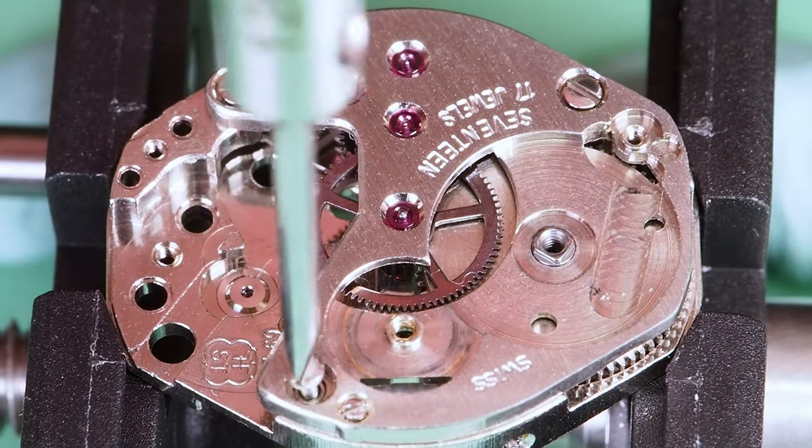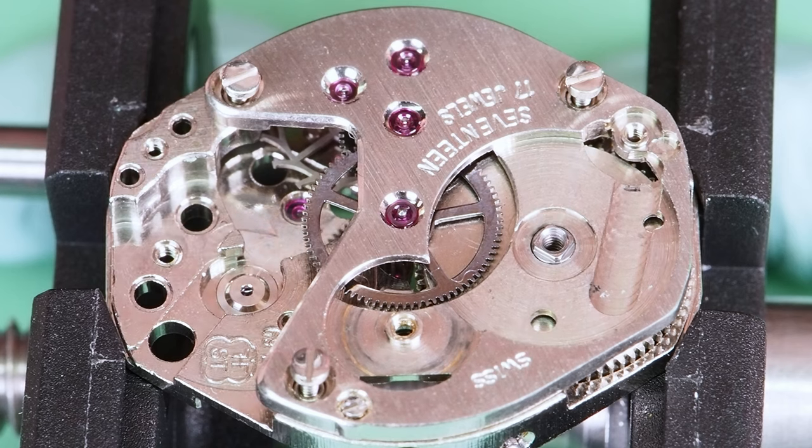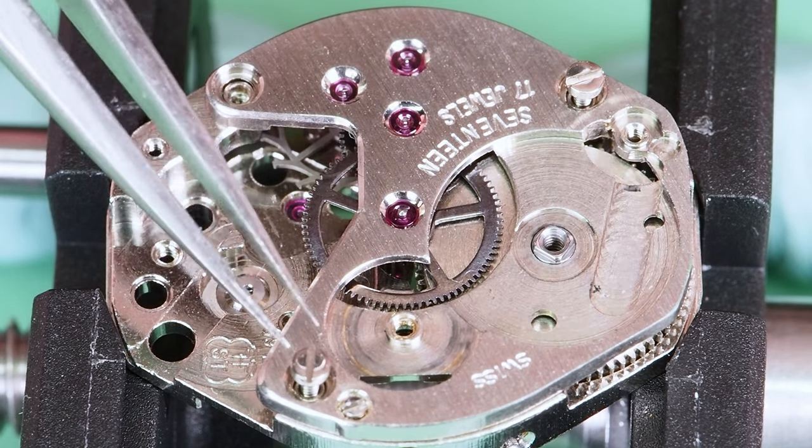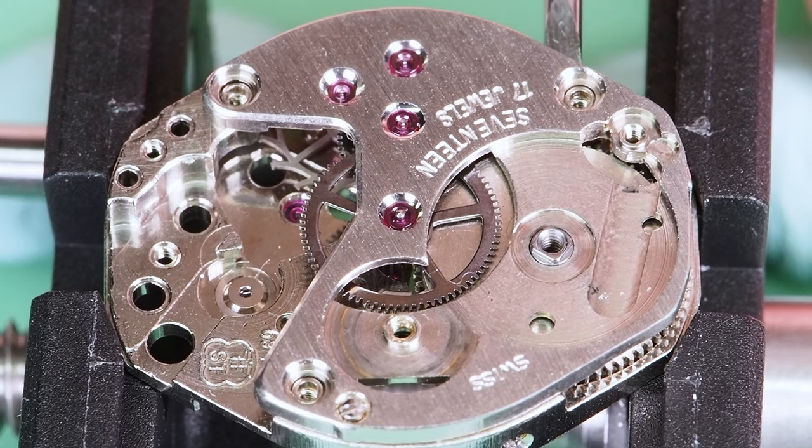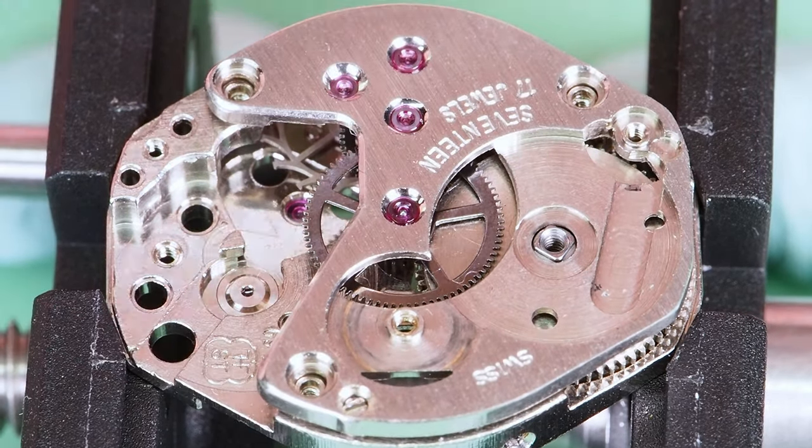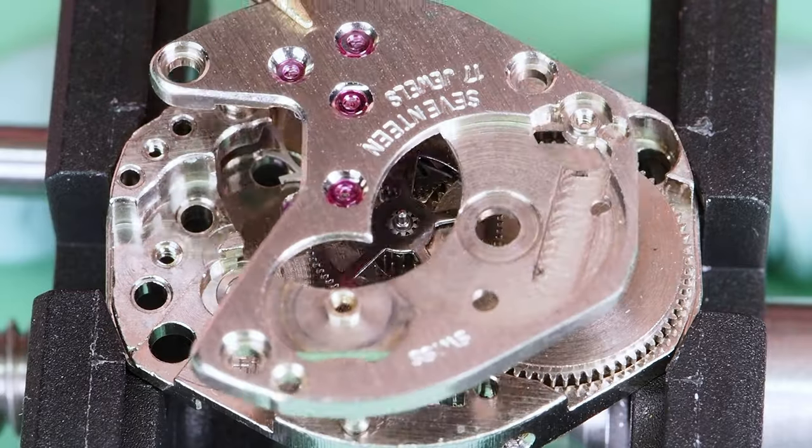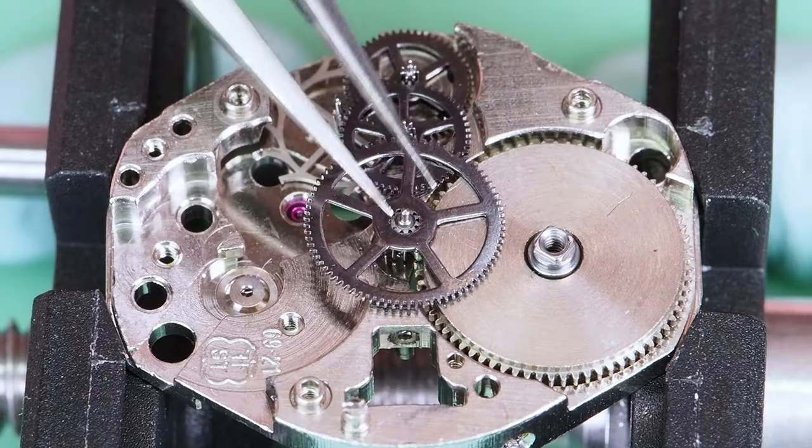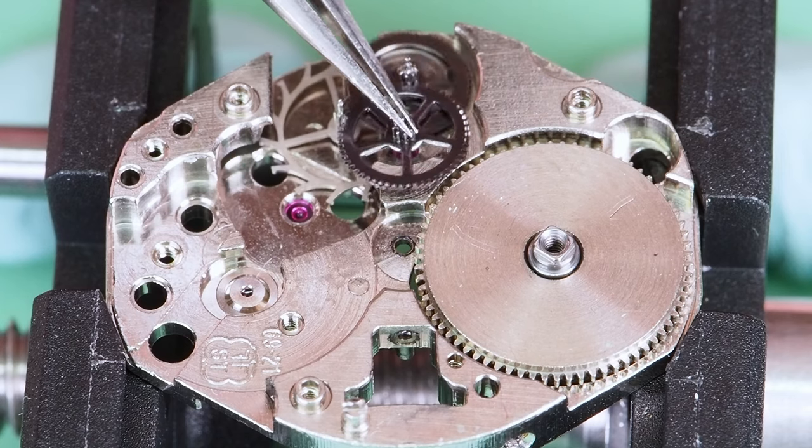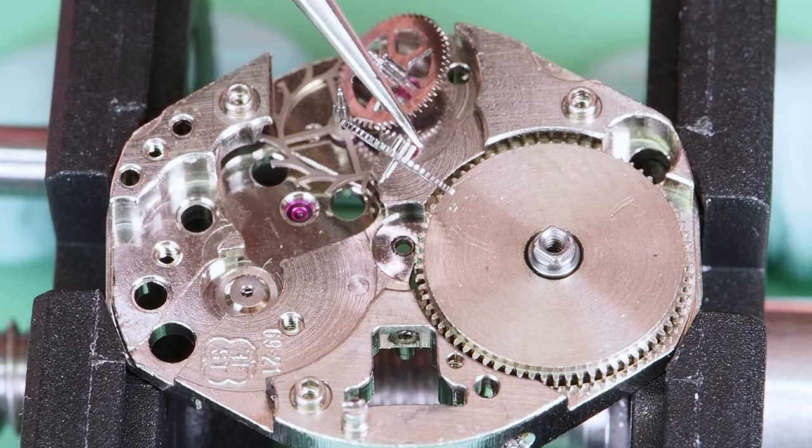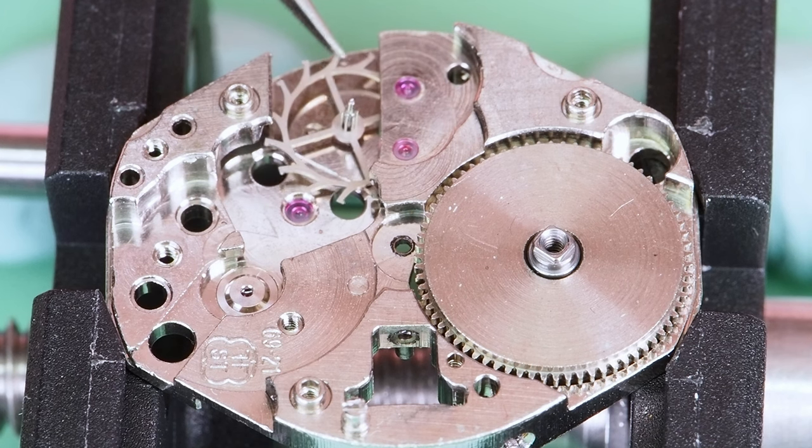Now I can remove the barrel and train bridge screws. I'll gently lift the barrel and train bridge until I get a decent gap there to lift it with my brass tweezers. Now the train is exposed, I can remove the train wheels. The center wheel. The third wheel. The fourth wheel. I have to lift and slide the escape wheel out of the main plate.